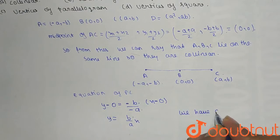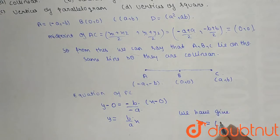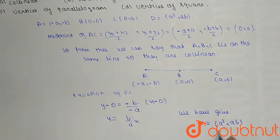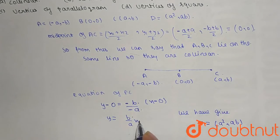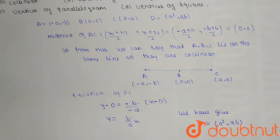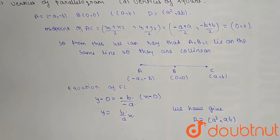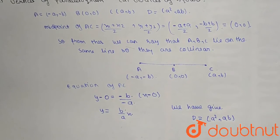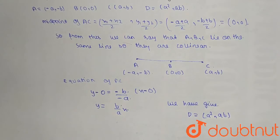So when we put the value of x here we will get the y coordinate, so from that we can say that point D also lies on the given line and thus A, B, C, D are collinear. So let's see.